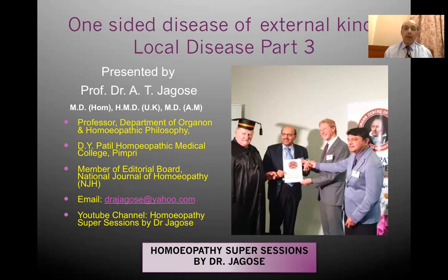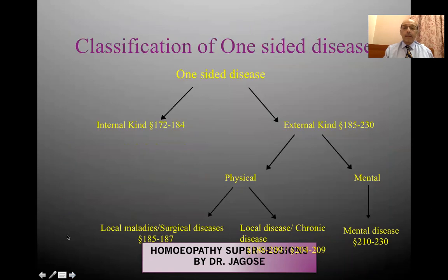In Part 2, we had seen about local maladies. In Part 3, we'll be seeing about the local disease. To recap the classification, we are now at this level: the external kind, physical kind, local disease.